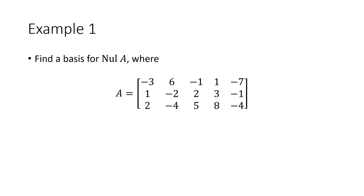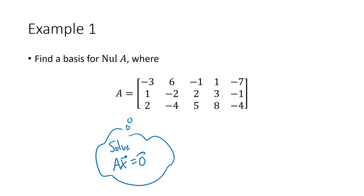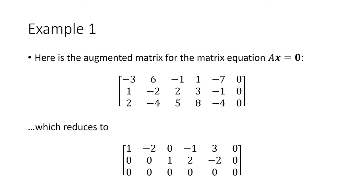As an example, to find a generic vector in the null space we solve the equation Ax = 0 by setting up and row reducing an augmented matrix. After row reduction, the general solution is: x1 = 2x2 + x4 - 3x5, x2 is free, x3 = -2x4 + 2x5, and x4 and x5 are free.